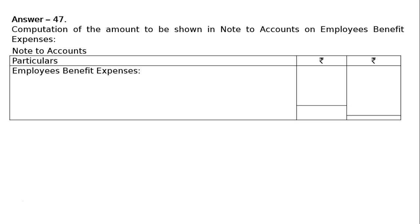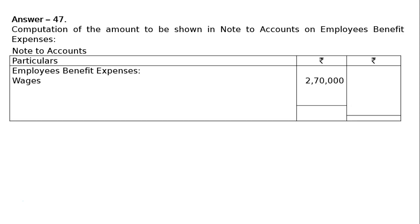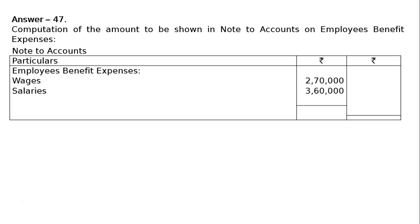What belongs to the employee? Exclude the last two. That is wages rupees 2,70,000, next one is salaries rupees 3,60,000, and next one is staff welfare expenses. These are all spent on employee benefit.